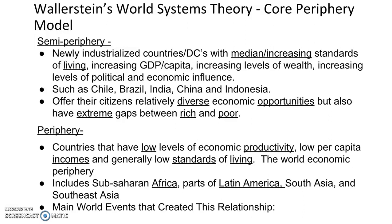Moving forward, we had the Industrial Revolution, which was in the late 1700s into the beginning of the 1900s. It began in England and then diffused through Europe and over to Canada, the United States, and Australia. This gave those countries the advantage of beginning industrialization much faster, so they gained wealth much quicker. All of these events ultimately led to the dynamic of core, semi-periphery, and periphery.